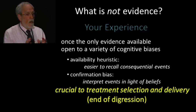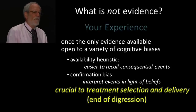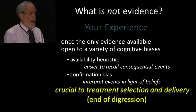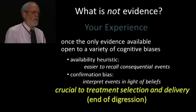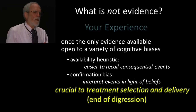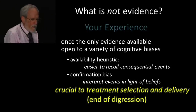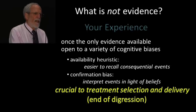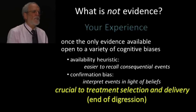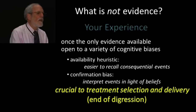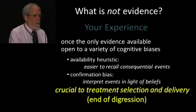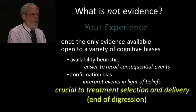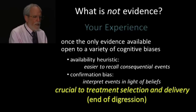These two cognitive biases, among a host of others, are why individual experience carries a high risk of bias for telling you what the best treatment is. Your experience is extremely valuable — it's crucial to treatment selection and delivery — but it's not the best evidence for knowing which treatments work best in terms of expected outcomes. You have to know how treatments work using evidence, not just your experience. That's the end of the digression.